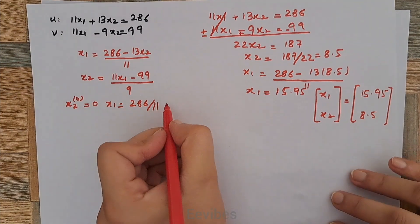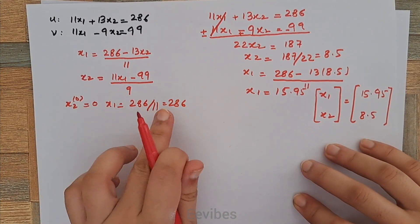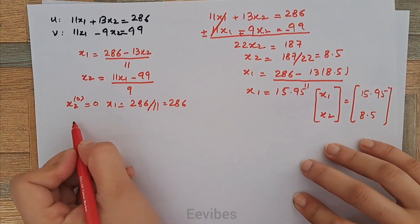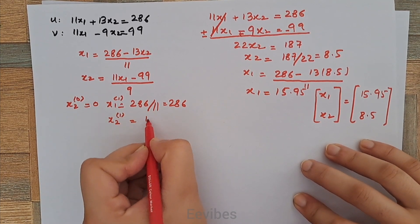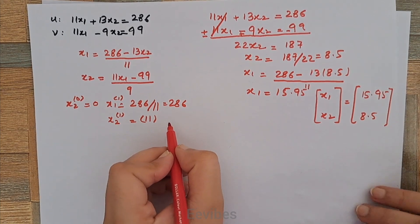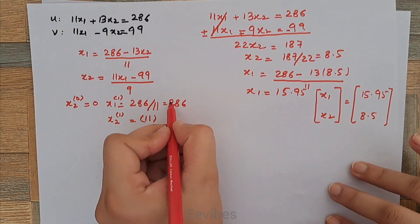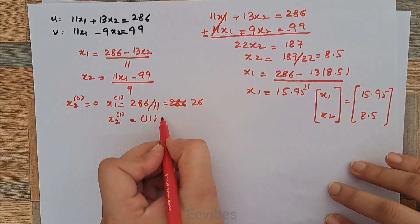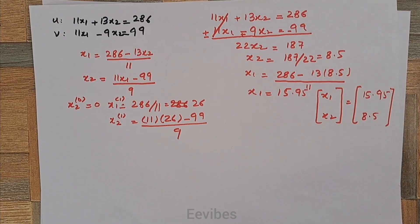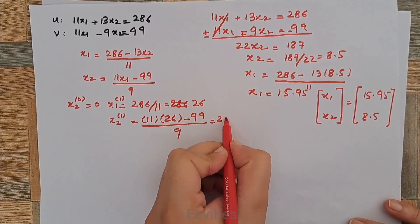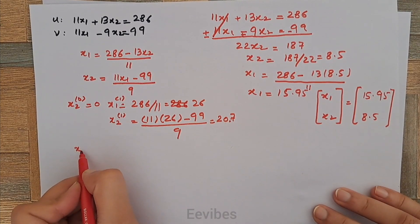So x1 equals 26. Once we have determined x1, this updated value is used for determining x2. The first iterative value of x2 is equal to 11 times 26 minus 99, all divided by 9. So the first approximation gives us x2 equal to 20.7.